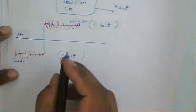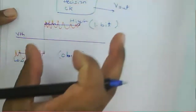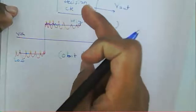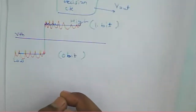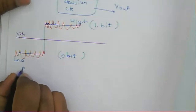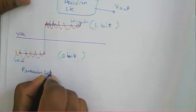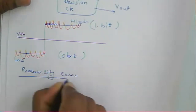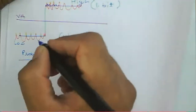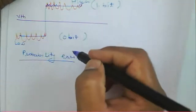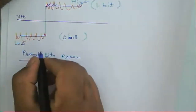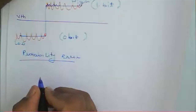In the absence of a pulse, the voltage is a low value. If a pulse is present, we get a high value. From this we can find out the probability of error — the bit error rate — which is the probability of transmitting a 1 but receiving a 0, or transmitting a 0 and receiving a 1.